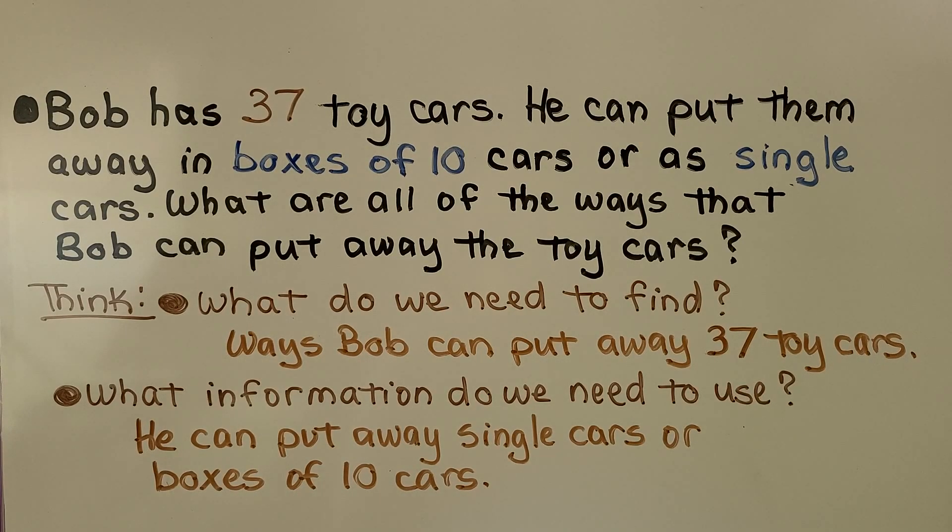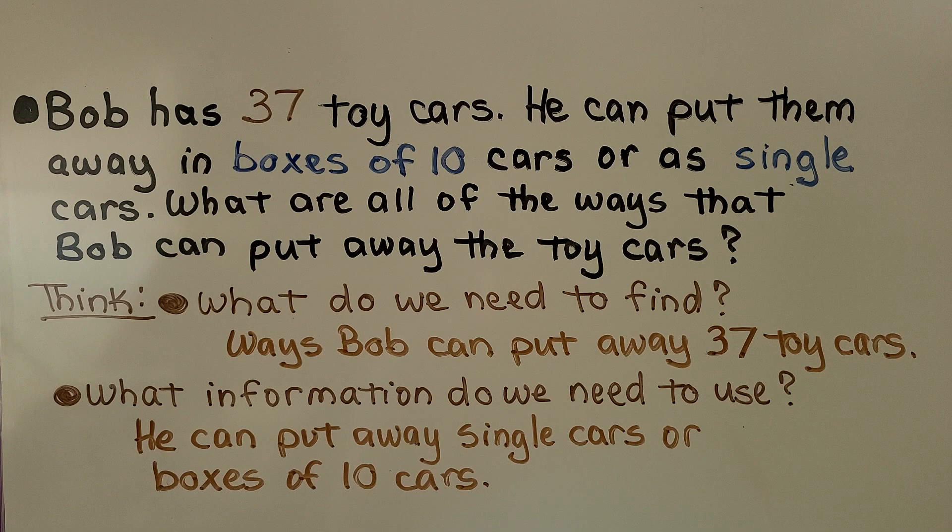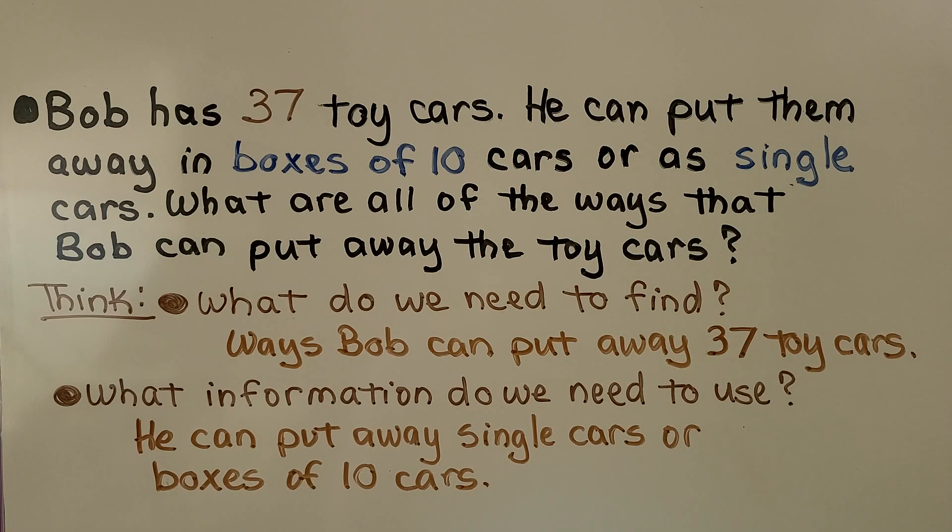Bob has 37 toy cars. He can put them away in boxes of 10 cars or as single cars. What are all of the ways that Bob can put away the toy cars? So we think, what do we need to find? We need to find ways Bob can put away 37 toy cars. And what information do we need to use? He can put away single cars or boxes of 10 cars.